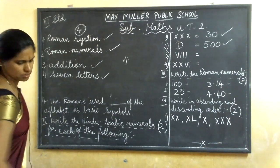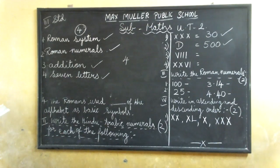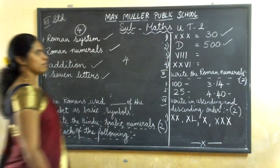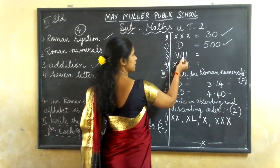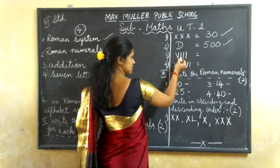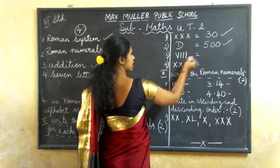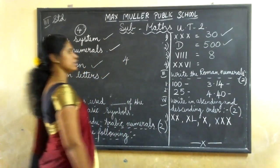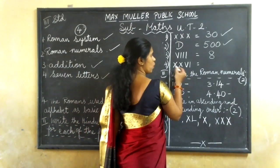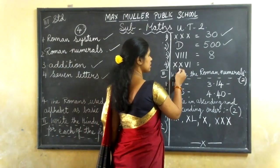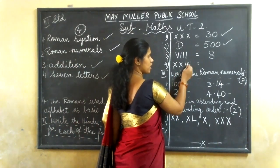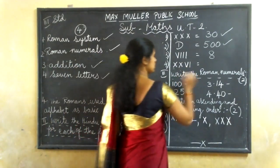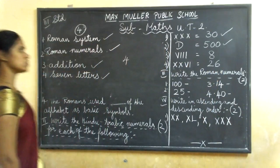Finish it fast. Next, third one — they have given VIII. V plus 1 is 6, 6 plus 1 is 7, 7 plus 1 is 8. Answer is 8. Next, fourth one — they have given XXV. X means 10, so 2X means 20. V means 5. 20 plus 5 is 25, plus 1 is 26. Answer is 26.